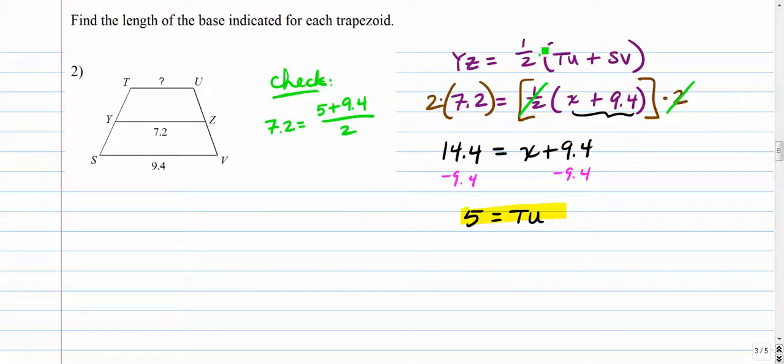equal to 5 plus 9.4 divided by 2. Notice, multiplying by one-half is the same as dividing by 2. That's why I can check this this way. So I do this really quickly. I can do it in my head. 5 plus 9.4, that's 14.4 over 2. So does 7.2 equal 14.4 over 2? Yeah, it absolutely does. That tells me that I'm correct.